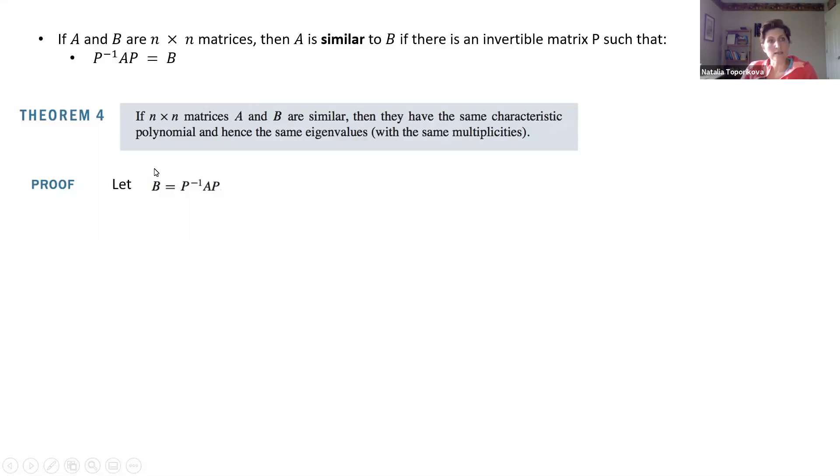So let's just try to prove this property. Let's start with the similarity formula. Matrix B is similar to matrix A, and there is the similarity property defined as inverse of matrix P times A times P. So let's try to move toward our characteristic equations. Let's try to write down B minus lambda I matrix. And again, we take our matrix B and write it down as a similarity property of matrix A.